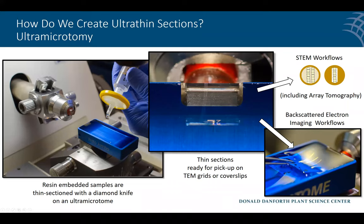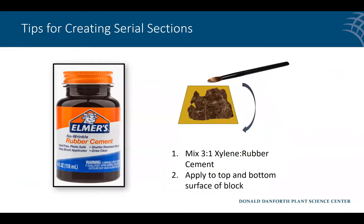You can also use a micromanipulator to pick sections in long ribbons up onto a coverslip. One practical trick: make sure the top and bottom of your resin block are as parallel as possible — if not, ribbons will come off curved. Also, I use a mixture of three-part xylene and one-part rubber cement applied with a brush to the top and bottom of the block. Let it dry for about 30 minutes and it'll make the surface tacky so sections stay together instead of falling apart.